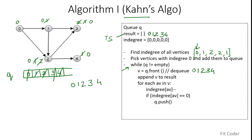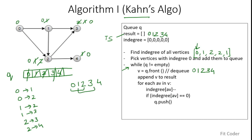Looking at the graph edges — 0 to 1 and 0 to 2, then 1 to 2 and 1 to 3, then 2 to 3 and 2 to 4 — all these properties are satisfied. 0 comes before 1 and 2; 1 comes before 2 and 3; and 2 comes before 3 and 4. So this is the topological sort obtained from Kahn's algorithm.